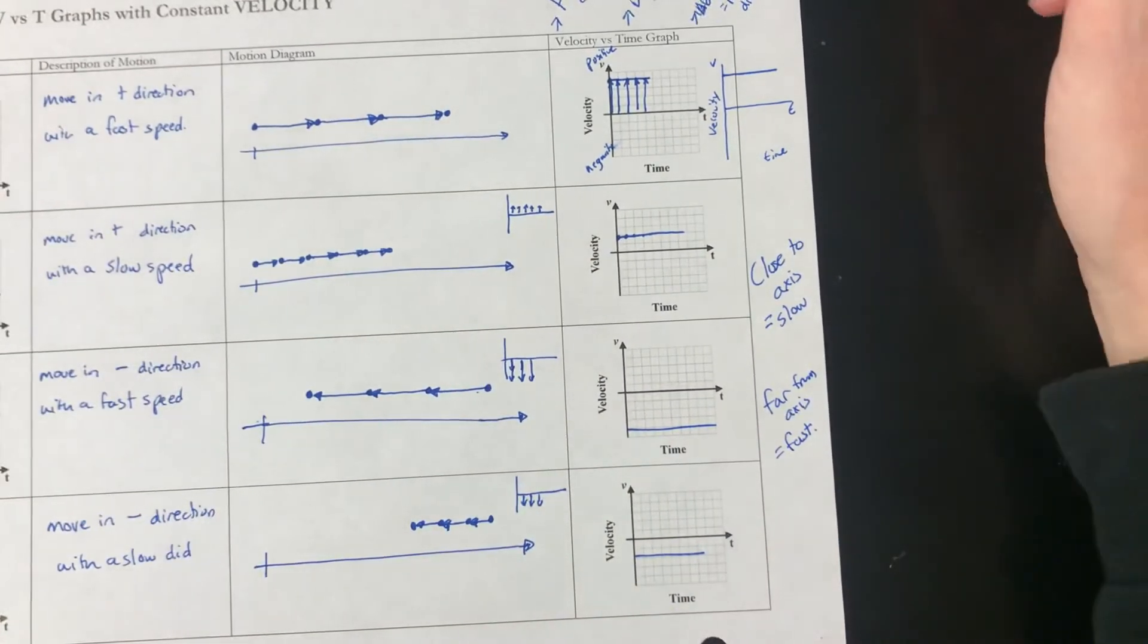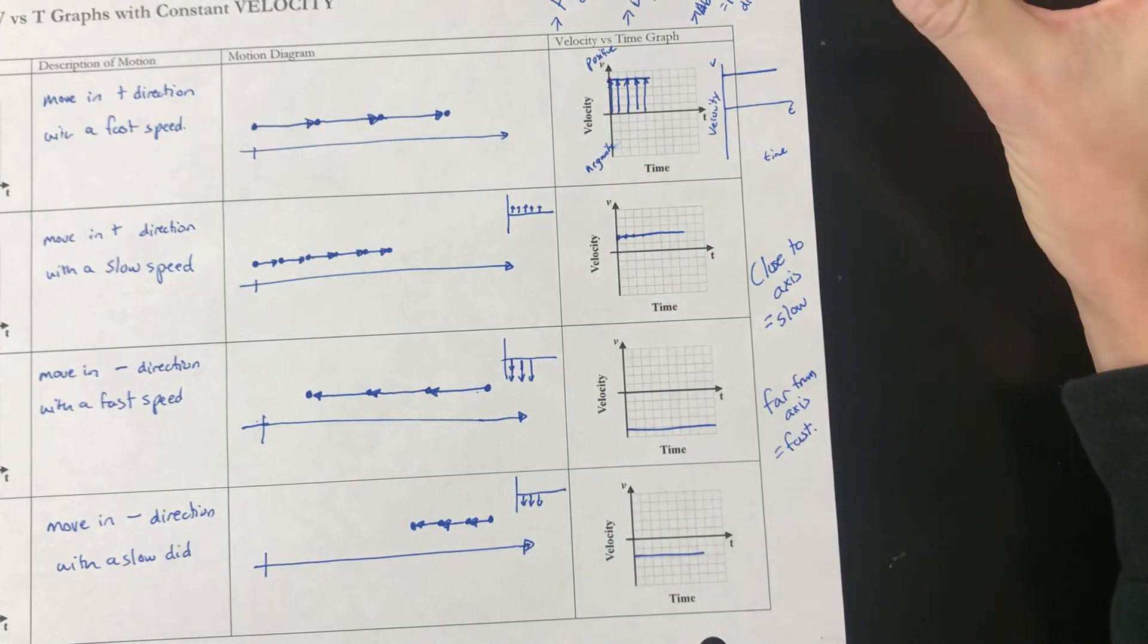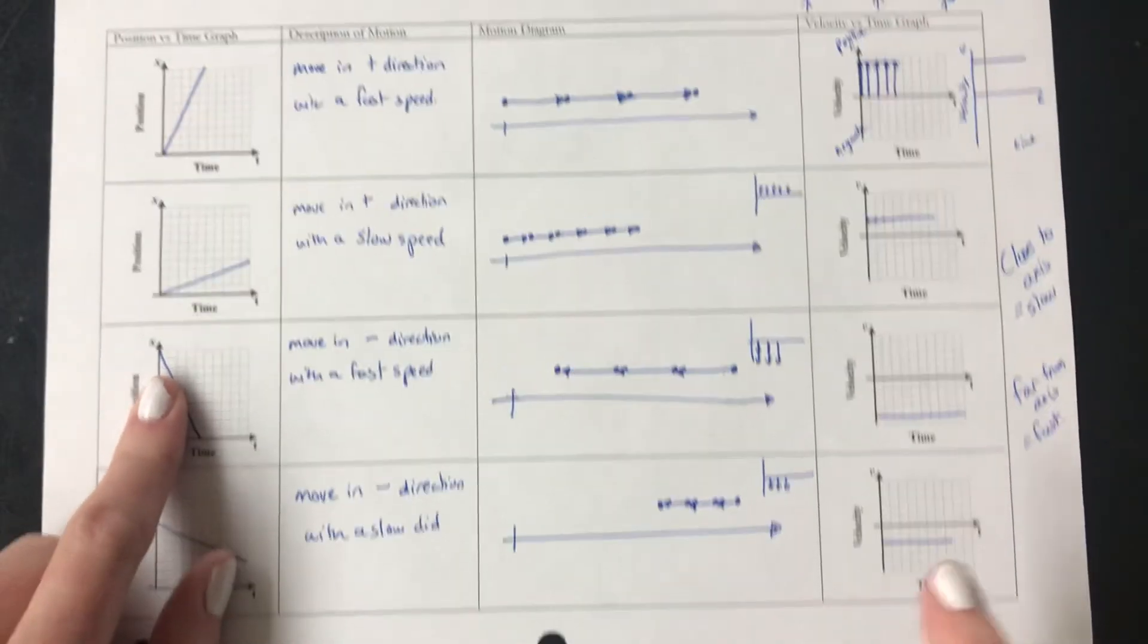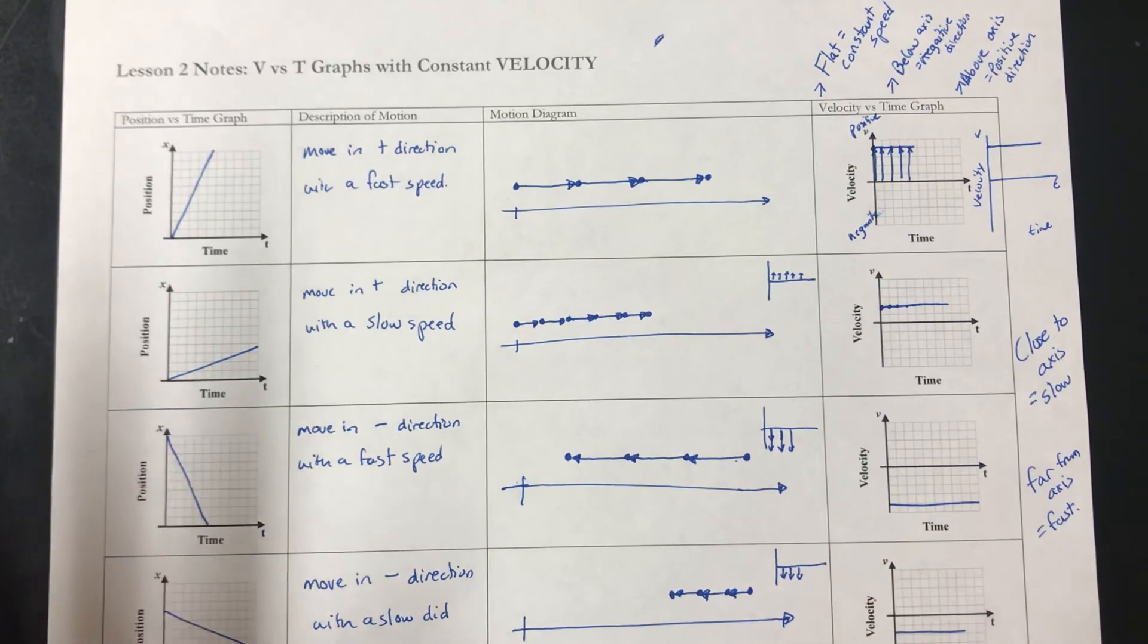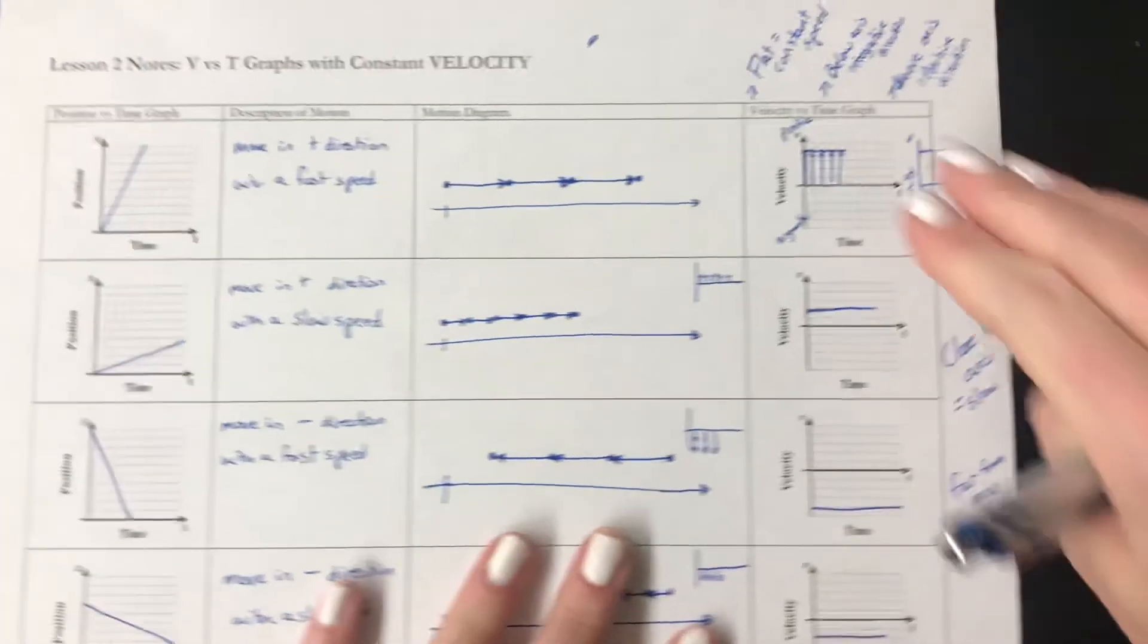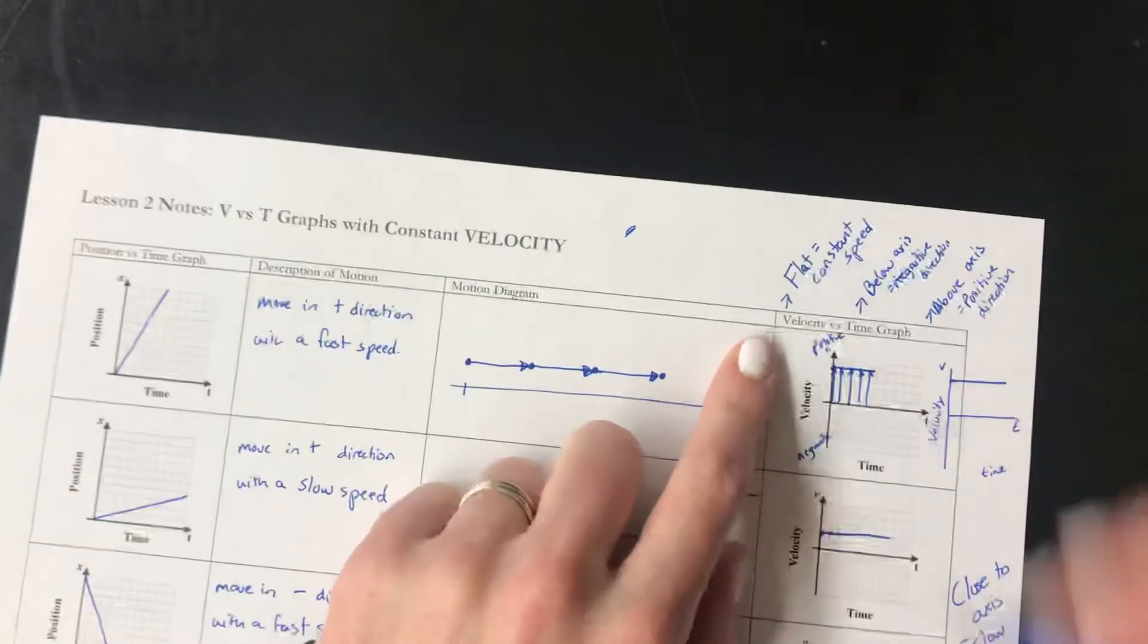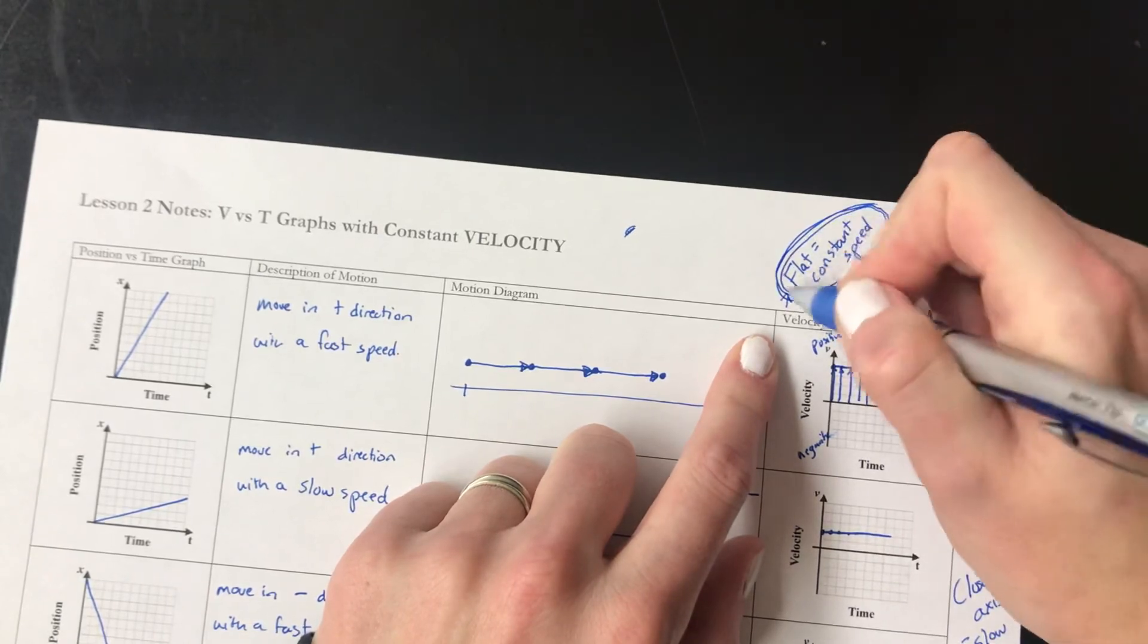So on the next page you have some practice where you're going to be drawing some motion diagrams and some x-versus-t graphs and some v-versus-t graphs. If you have questions or you need help or you're not sure, especially with these v-versus-t graphs, they're a little tricky sometimes. Just remember that when we're dealing with constant velocity, every single line on a v-versus-t graph should be flat.